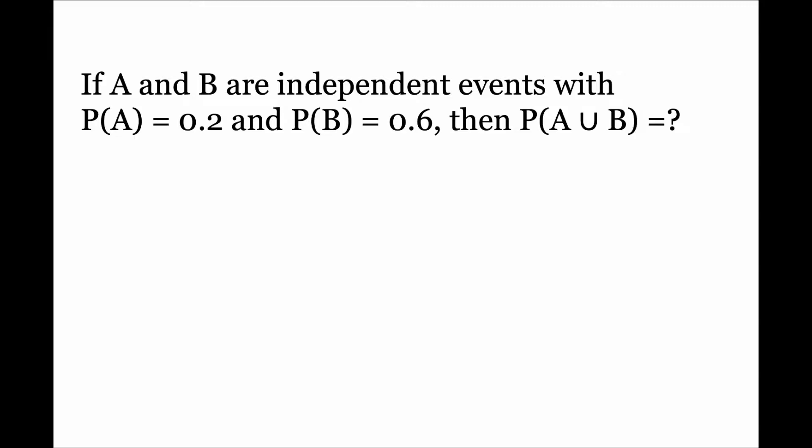Let's work on this interesting question. The question states: if A and B are independent events with probability of A equal to 0.2 and probability of B equal to 0.6, then what is the probability of A or B occurring?